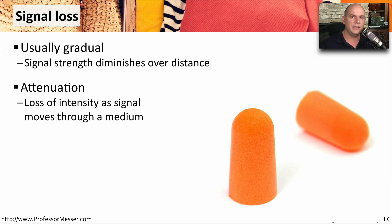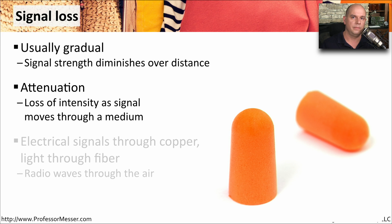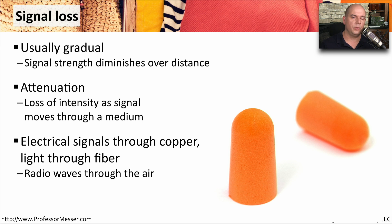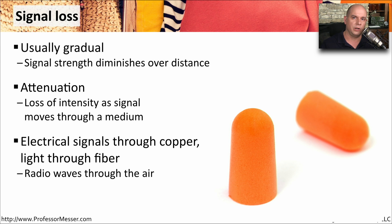As we're moving this signal through a medium — whether it's a copper connection, a fiber connection, or even through the air — we're going to have attenuation of the signal as it goes farther through that medium. All of these different network types use some type of signal: electrical signals through copper, light through fiber, and radio waves through wireless networks.